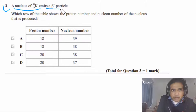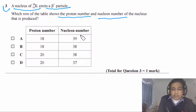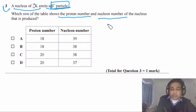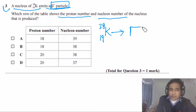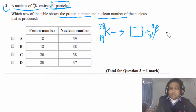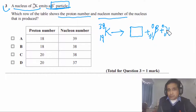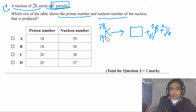Question 3 says: a nucleus of potassium-38 emits a beta-plus particle. We write potassium: atomic number 19, mass number 38. This decays into a nucleus, emitting a beta-plus particle (positron) and an electron neutrino to conserve lepton number — since the positron is a particle, this must be a neutrino.